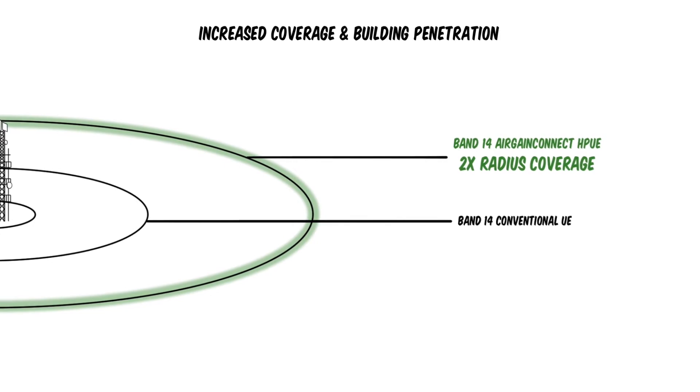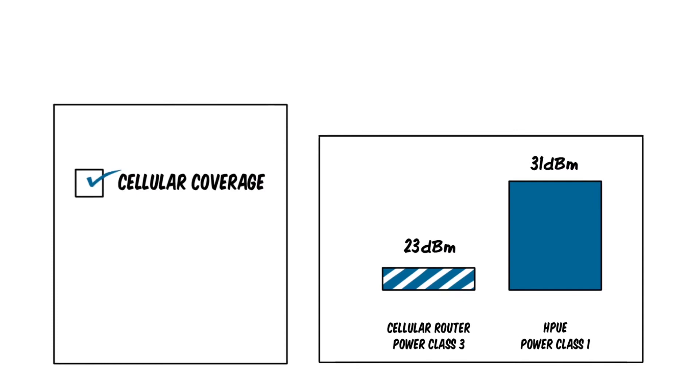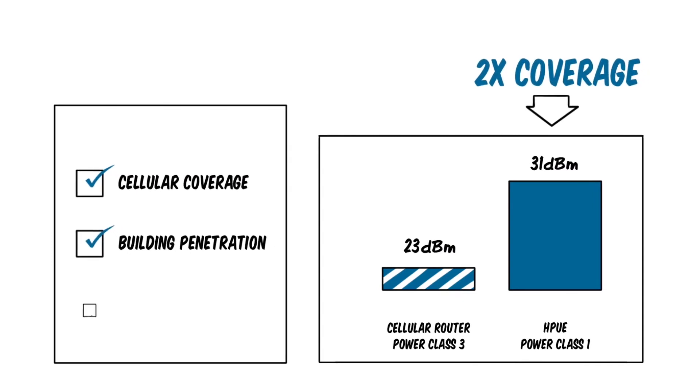HPUE provides far greater transmit power than your router's conventional modem, providing increased cellular coverage, deeper building penetration, and higher data rates.